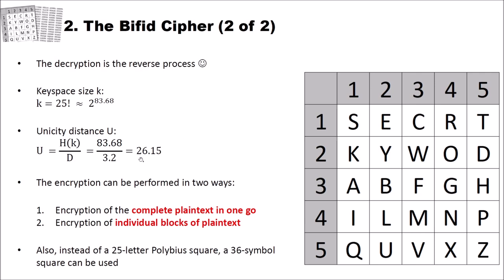I also have to tell you that the encryption of the cipher can be performed in two ways. First, we could encrypt the complete plaintext in one go. That is what we did in the example on the previous slide. But there is also another way how you could use the cipher, and that is encryption of individual blocks of plaintext. For instance, you cut your plaintext into blocks of 5, and then you perform the previously shown steps for encryption on each of these blocks individually.